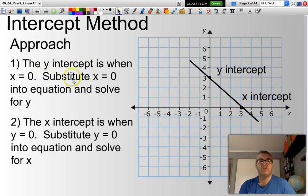The y-intercept is when x equals 0. Substitute x equals 0 into the equation and solve for y. The x-intercept is when y equals 0. Substitute y equals 0 into the equation and solve for x.